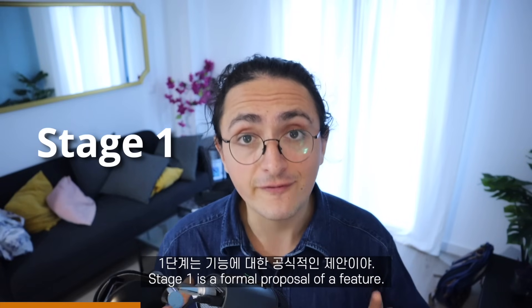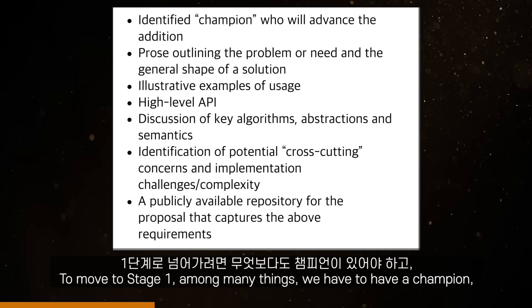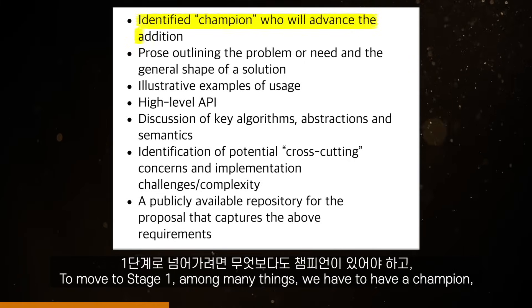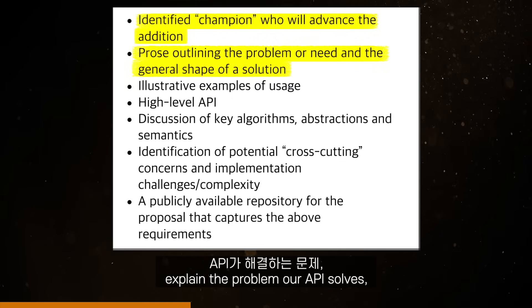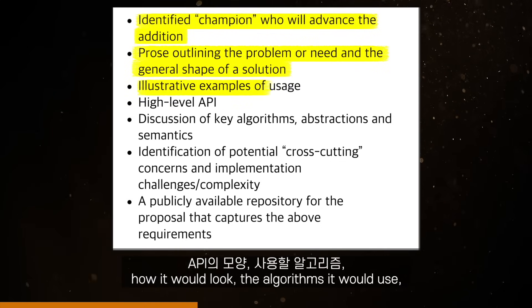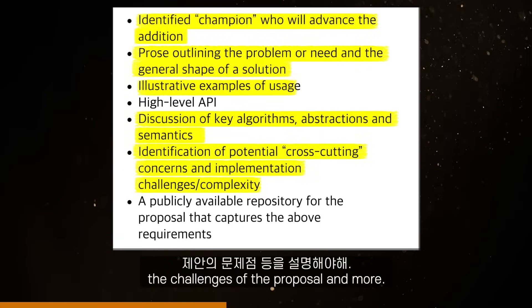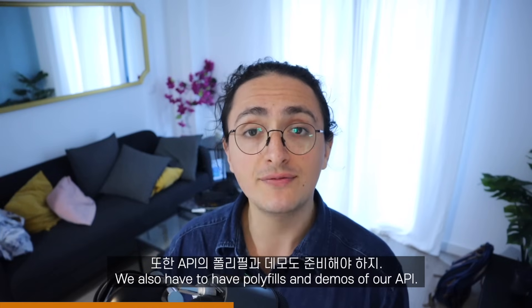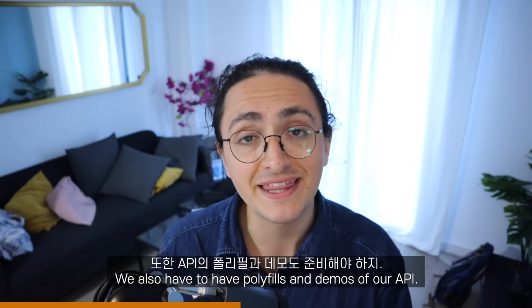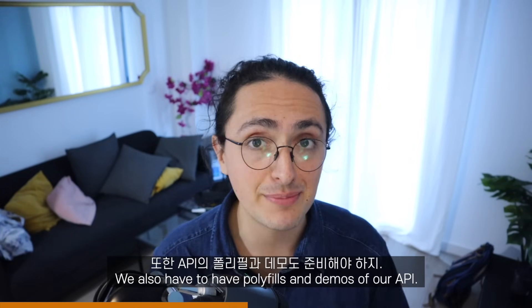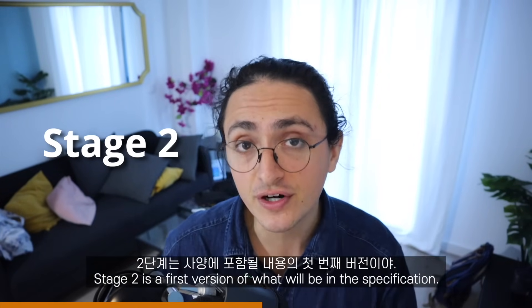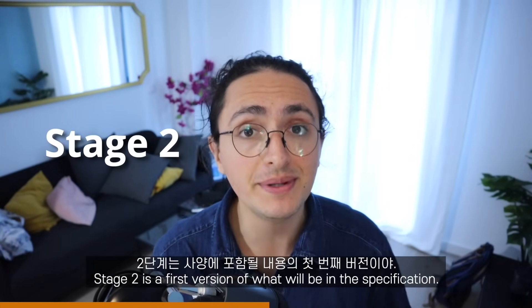Stage one is a formal proposal of a feature. To move to stage one, among many things, we have to have a champion, explain the problem our API solves, how it would look, the algorithms it would use, the challenges of the proposal, and more. We also have to provide polyfills and demos of our API.